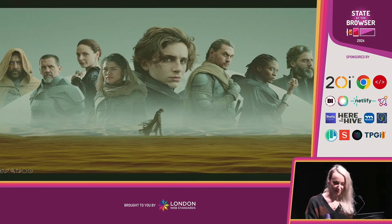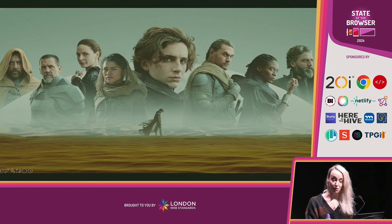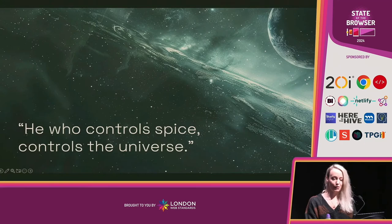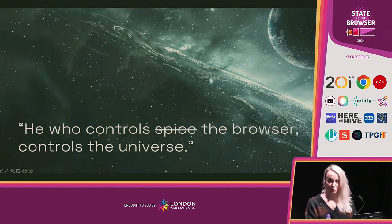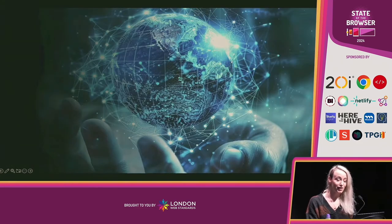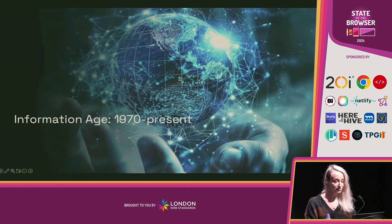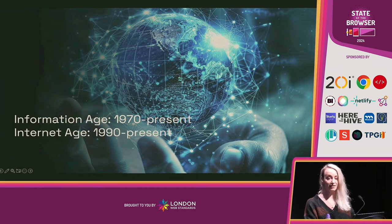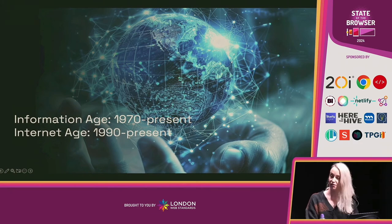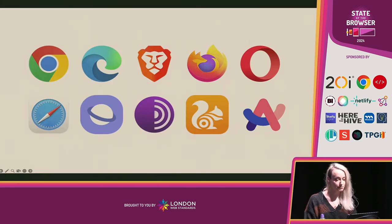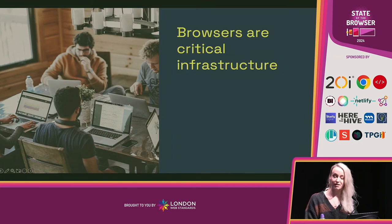In case you are not familiar with the Dune plot, there is a substance and a resource called spice that formed an essential block of commerce and technological development in the known universe in that story. They say that he who controls the spice controls the universe, but I'm not talking about spice, obviously. I'm talking about browsers and access to information. He who controls the browser controls the universe. And I don't think this is such a wild statement. We live in the information age — and the sub-period of that is the internet age. Information is the spice of our world, and our access to a seemingly never-ending supply of information is gatekept through browsers. And they have become critical infrastructure to life as we know it.